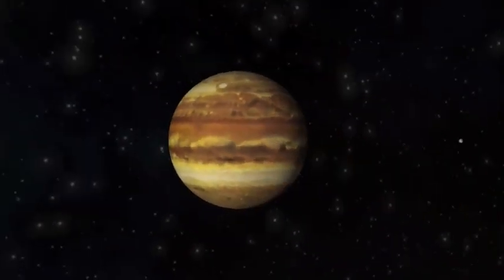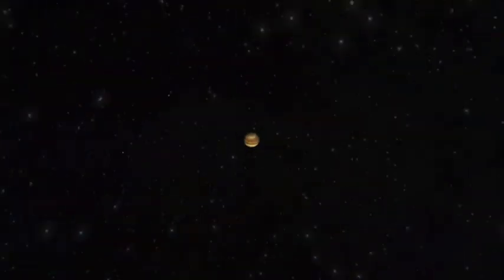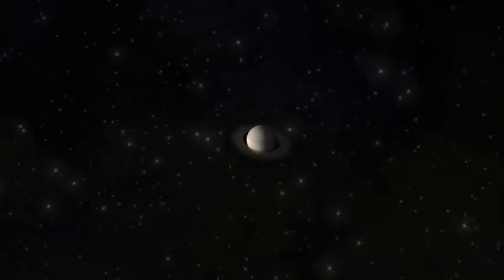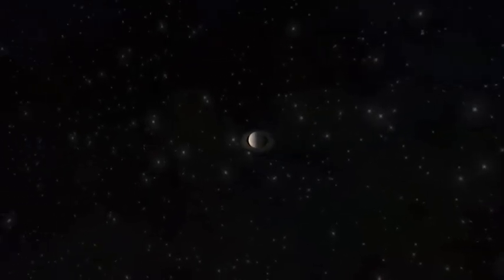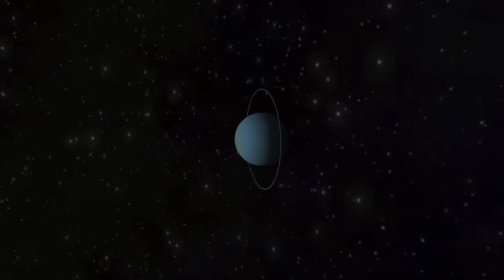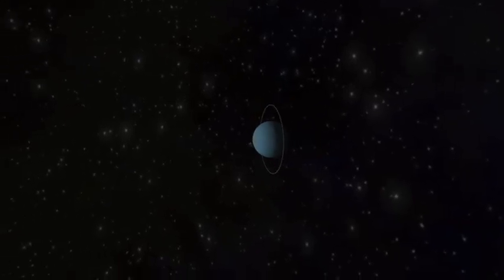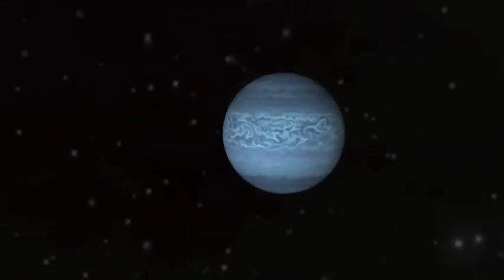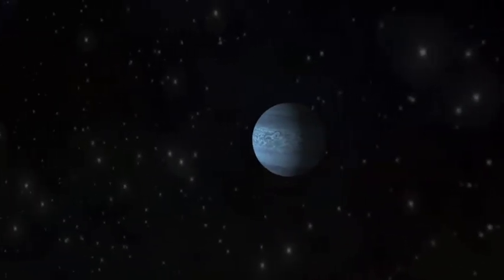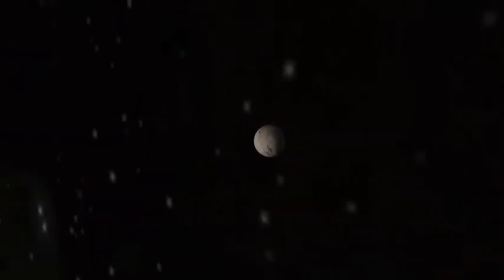Jupiter is the first and largest of the gas giants, followed by Saturn with its glorious rings. Uranus rolls on its side. Neptune is a blue world, followed last by ex-planet Pluto.